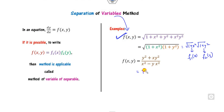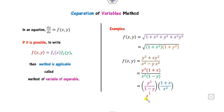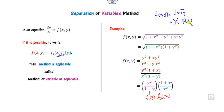For another example: if I take y squared common from the numerator, it can be written as (1 + x), and taking x squared common from the denominator gives a function of y only and a function of x only — so the separable method is applicable. But if f(x, y) equals root of (x + y), you cannot write it as a product of f₁(x) and f₂(y), so the separable method is not applicable.